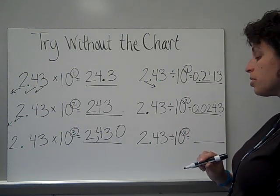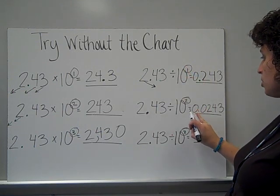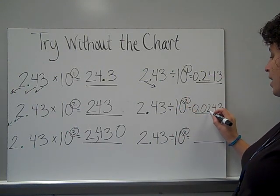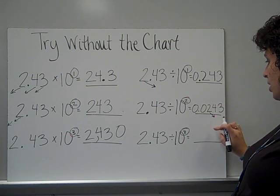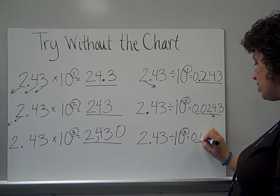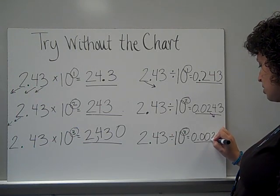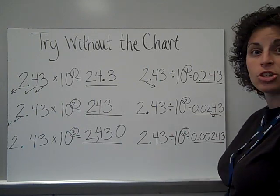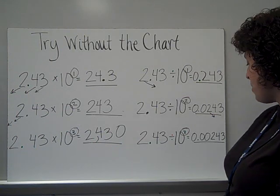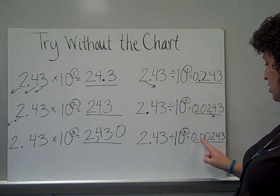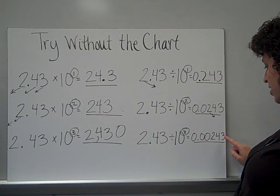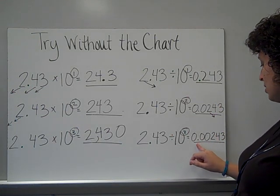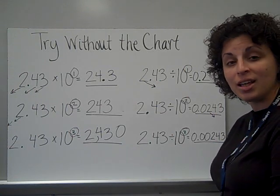Dividing by 10 to the third power. 10 to the first was one move, 10 to the second was two moves, so 10 to the third means the 2 has to move back one more place value, putting it in the thousandths place. I've got to fill in zeros up to the thousandths place, then comes my 2, then my 4, then my 3. There's a place value pattern: tenths, hundredths, thousandths, ten-thousandths — so the next place value is hundred-thousandths. To read this correctly, it would be 0 and 243 hundred-thousandths.